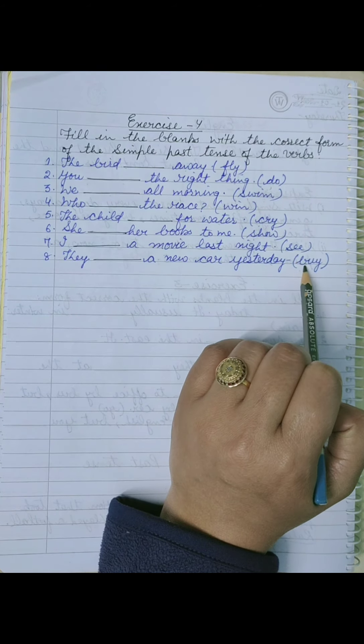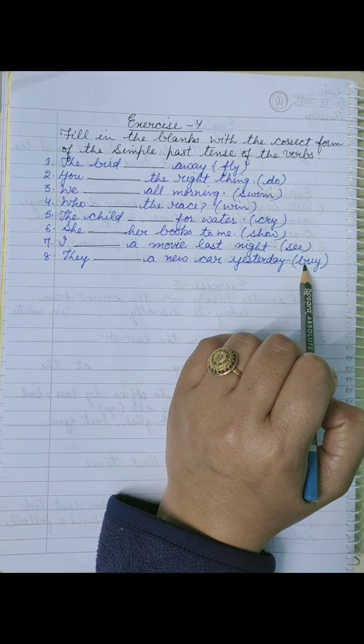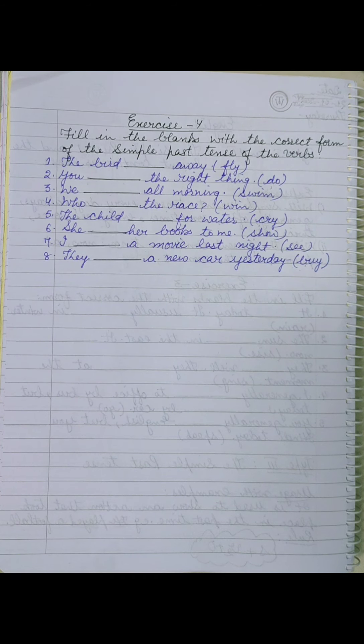And past participle means third form: flown, done, swam, won, cried, showed, seen, bought. Clear? So before doing these tenses, understand forms of three forms of verbs, right?